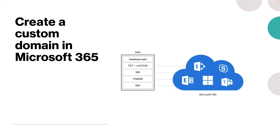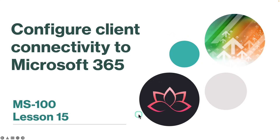When you create your custom domain in Microsoft 365, each domain with any attendant sub domain can only be validated to a single Microsoft 365 tenant. You cannot have a domain like contoso.com registered to any other tenant — it can only be registered to one. That's one of the important things to understand. That concludes this lesson. In the next lesson we're going to learn about configuring client connectivity to Microsoft 365. I'll see you in the next one — until then, take care.